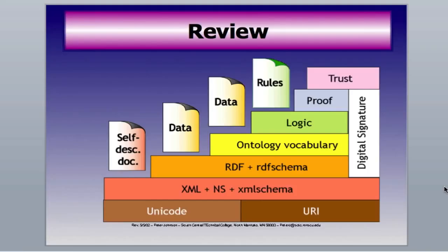Here are our layers again. We start with a basic alphabet — the Unicode — which is computerized. We build on top of it an XML structure. That structure is used to build the RDF triplets. Those triplets follow specific rules that are not ambiguous to a computer — the computer can't handle ambiguous data like our minds can — so we set up an ontology vocabulary to handle those triplets. We tie that in with logic, proof, and trust, and you have the semantic web.